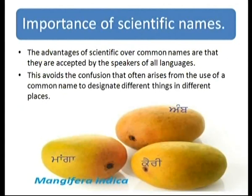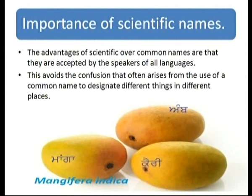What is the importance of scientific names? Mango is called 'aamb' in Punjabi, 'keri' in Gujarati, and 'maanga' in Malayalam — three different names for the same species. The advantage of a scientific name over a common name is that it is accepted by speakers of all languages, and avoids confusion that arises from common names meaning different things in different places.